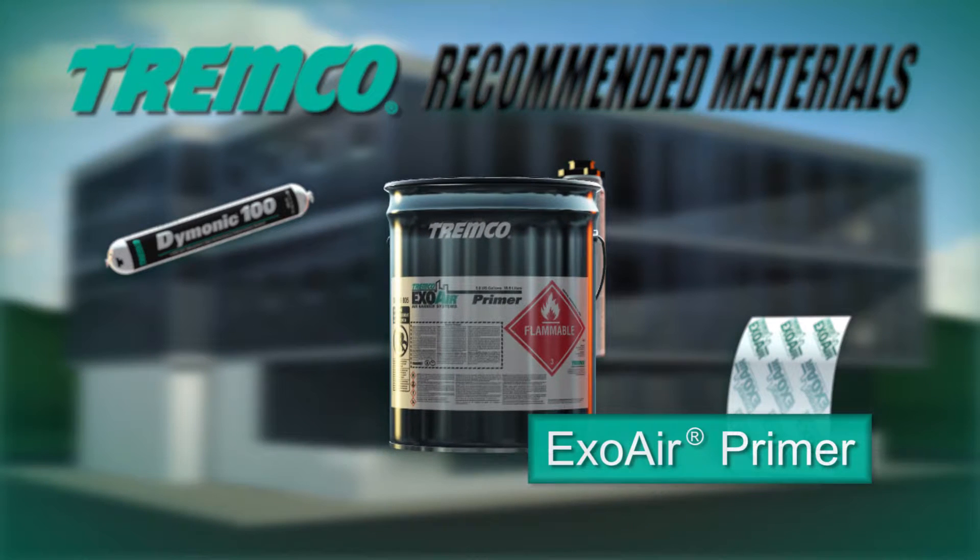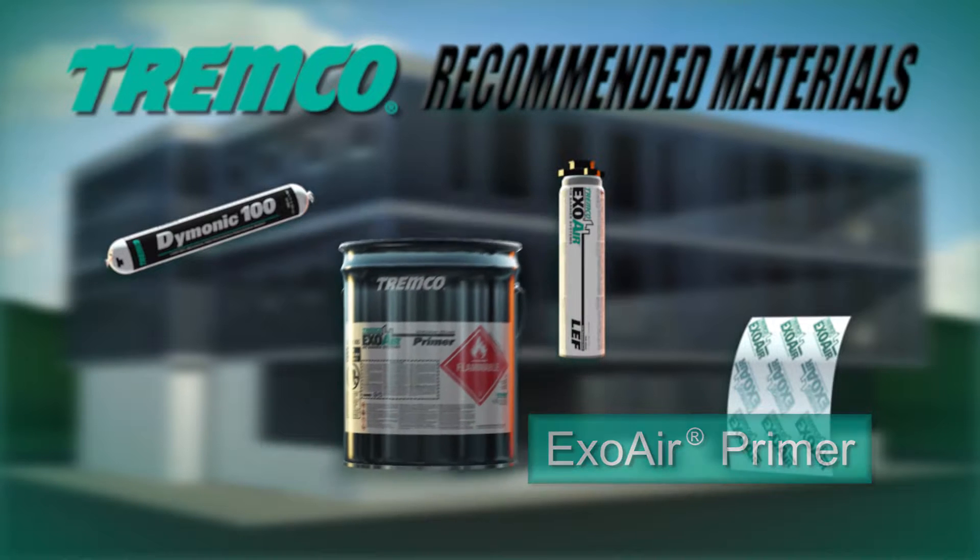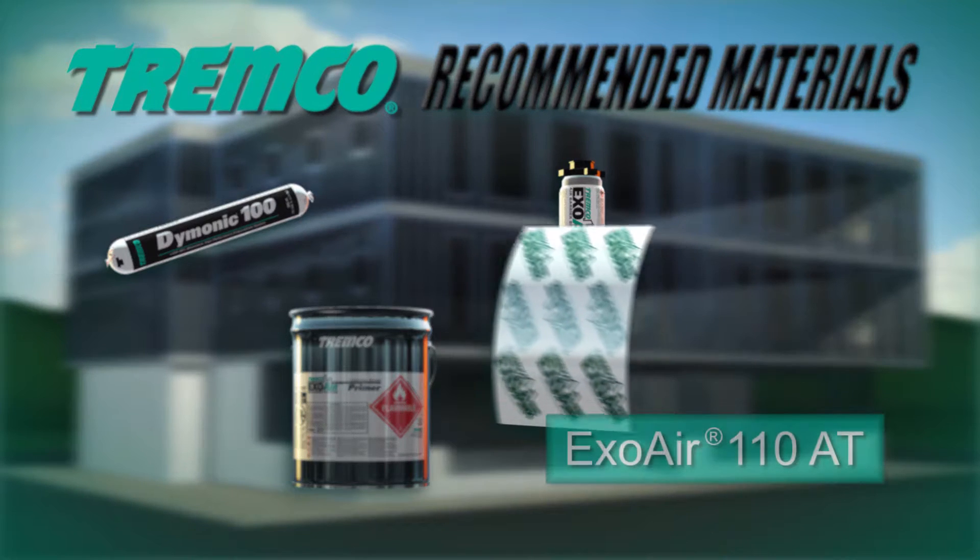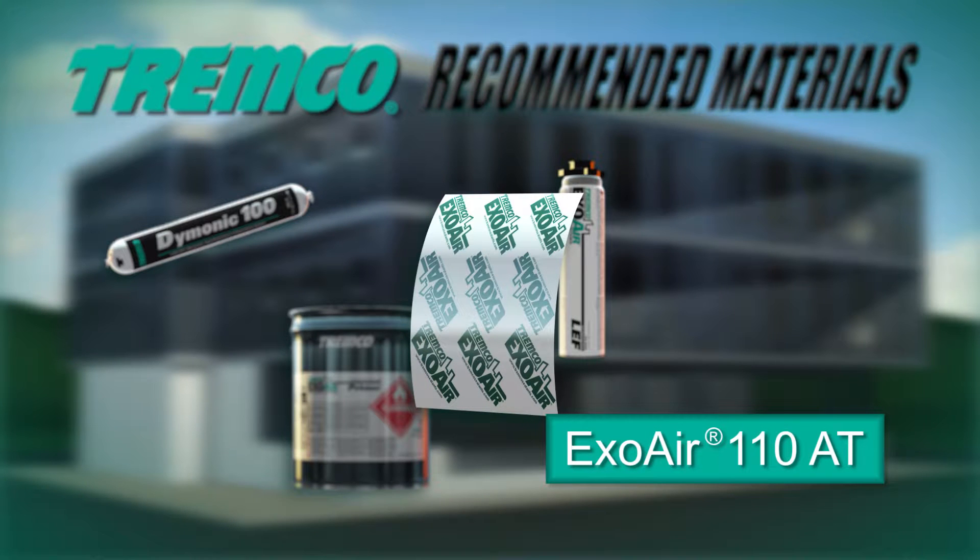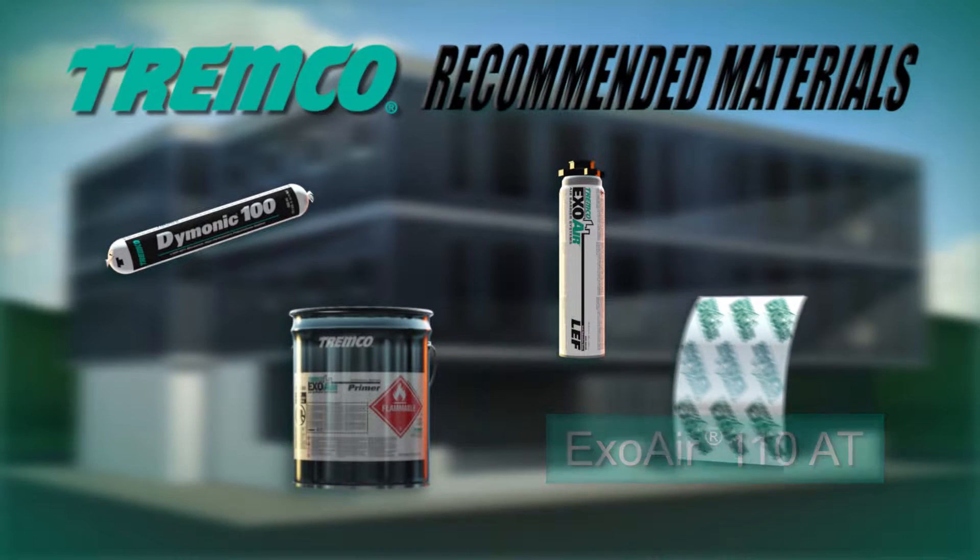ExoAir Primer is specifically formulated for use with the ExoAir line of air barrier systems, ensuring compatibility with all components required to create the full assembly. It can be applied to common construction substrates using a brush or roller. ExoAir 110AT is a composite 24mm sheet designed for use as the membrane or as a component of an air barrier system.